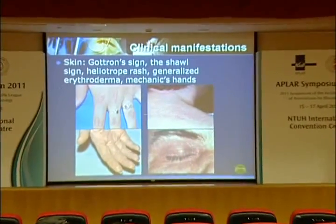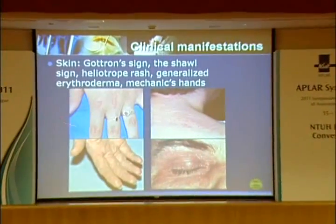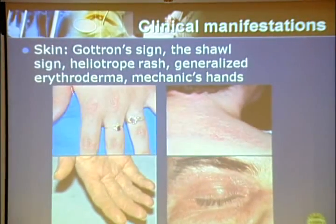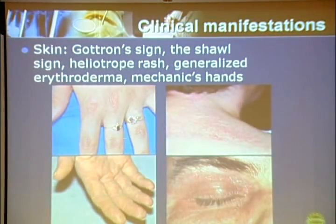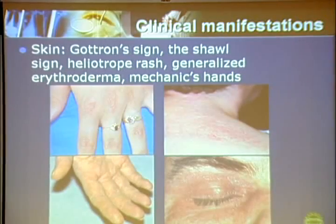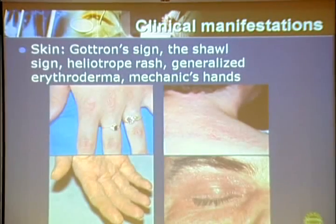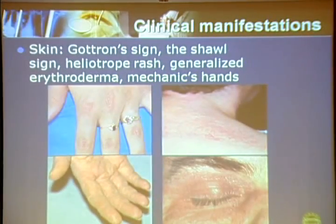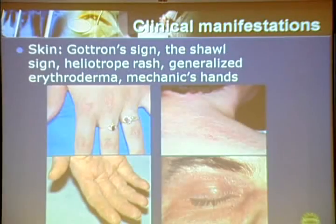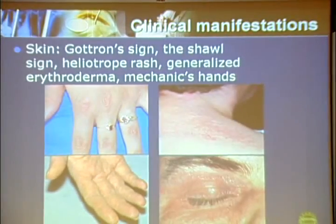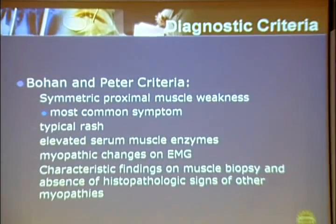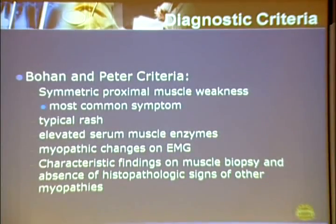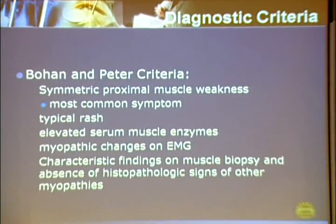Some typical skin lesions seen in dermatomyositis include Gottron's sign and Shawl sign, and mechanic's hands. Patients may also have heliotrope rashes, which are suggestive of dermatomyositis.